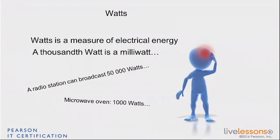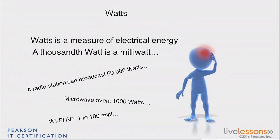If you look at your microwave oven, you're more in the one-thousand-watt range. Now, your access point — the maximum power it can send — is 100 milliwatts, and it typically goes lower than that, down to one milliwatt. So imagine a microwave oven sending one thousand watts with your access point nearby operating at 10 or 100 milliwatts.